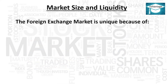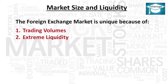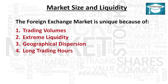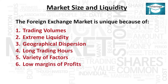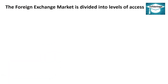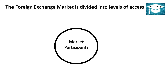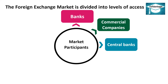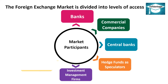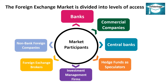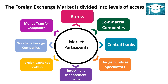Market Size and Liquidity: The foreign exchange market is unique because of: 1. Trading Volumes, 2. Extreme Liquidity, 3. Geographical Dispersion, 4. Long Trading Hours, 5. Variety of Factors, 6. Low Margins of Profits, and 7. Use of Leverage. The market is divided into levels of access. Market participants include: 1. Banks, 2. Commercial Companies, 3. Central Banks, 4. Hedge Funds as Speculators, 5. Investment Management Firms, 6. Foreign Exchange Brokers, 7. Non-Bank Foreign Companies, and 8. Money Transfer Companies.